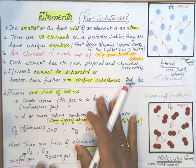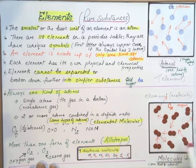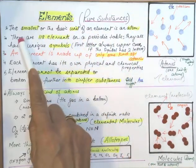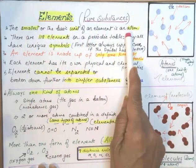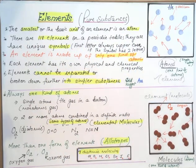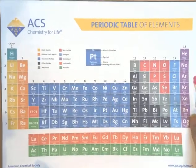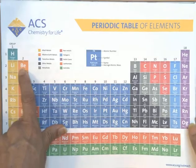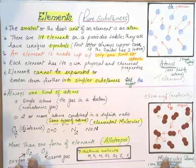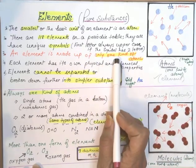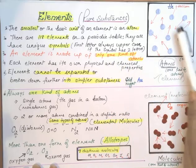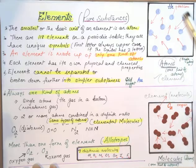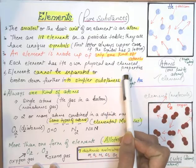Now, elements in detail. Elements are pure substances — two types of pure substances are elements and compounds. The smallest or basic unit of an element is an atom. There are 118 elements on the periodic table. When the symbol of an element has two letters, the first letter is always uppercase; when it's a single letter, it's just uppercase. An element is made up of only one kind of atoms — for example, all helium atoms are only one kind of atom. Each element has its own physical and chemical properties.